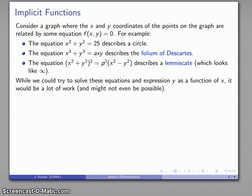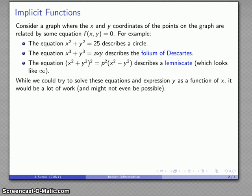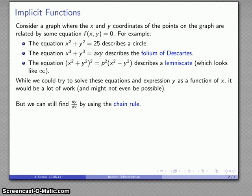While we could try to solve these equations and express y as a function of x, it would require a lot of work and might not even be possible. For the circle it isn't too bad, for the folium we have to solve a cubic equation which is much more difficult, and for the lemniscate we have to solve a degree-4 equation. So do we have to do this just to find the slope of the tangent line? No — we can still find the derivative using the chain rule, and knowing a little calculus helps us get around a lot of messy algebra.